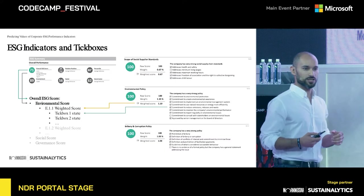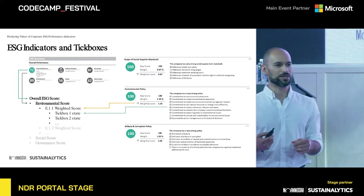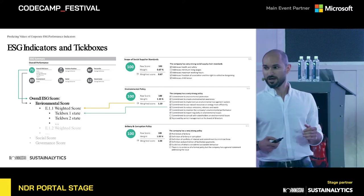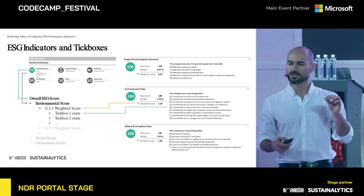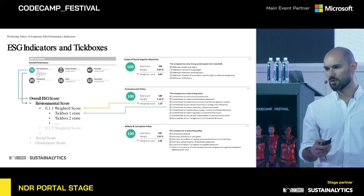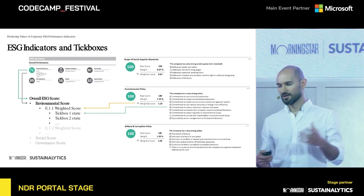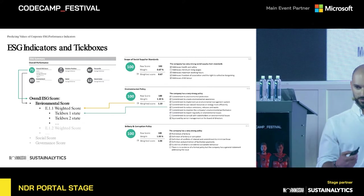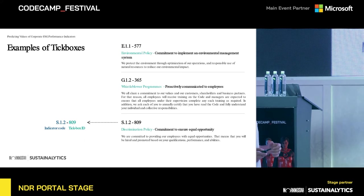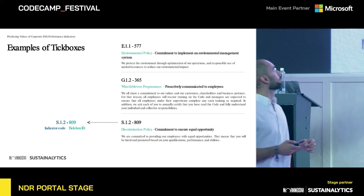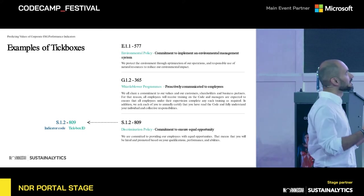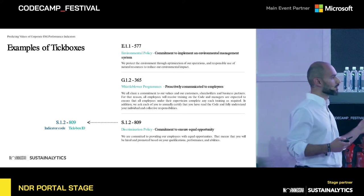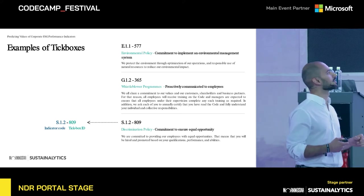ESG is a system for assessing the sustainability of companies based on three categories: Environmental, Social, and Governance. Each of these categories has subcategories called indicators, and each of those subcategories consists of binary parameters which we call tick boxes. The problem of predicting indicator scores boils down to a simpler problem of predicting the value of a tick box for a company. For example, in the environmental category, we have an indicator for environmental policy, and one factor is the commitment of a company to implement environmental protection. In the social axis, we have a discrimination policy indicator, and one tick box is commitment to ensure equal opportunity.